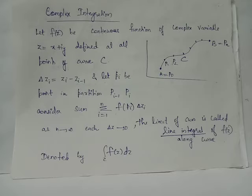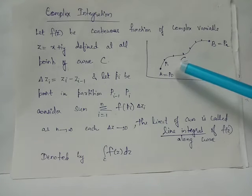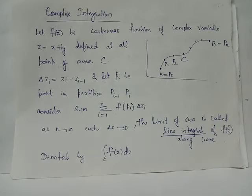be an arbitrary point in the partition Pi-1, Pi which lies on the curve c. We have f(z) defined on complex variable z, and delta z denotes the small change in z represented as delta z equals zi minus zi-1.